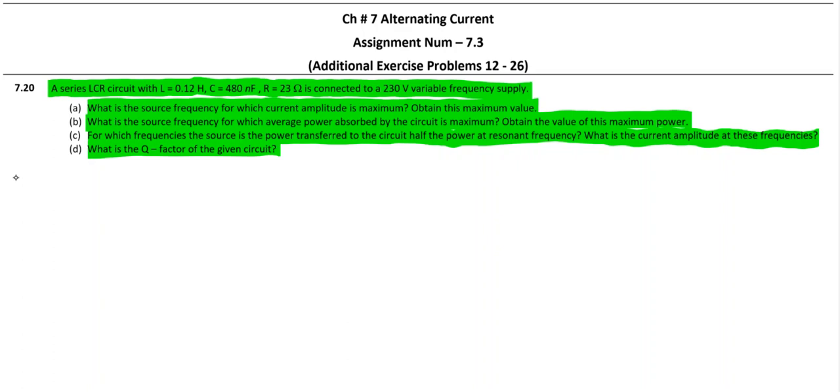Let us start with data collection. What we are given is L which is 0.12 Henry, C is 480 nanofarad, so we have to convert it as 480 times 10 raise to minus 9 farad. Let me shift it down.